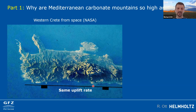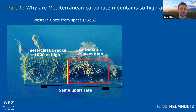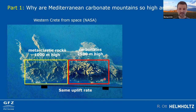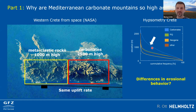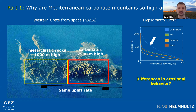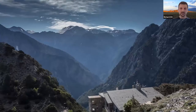Moving along the coastline we get into a really high mountain range at 2.5 kilometers elevation. The difference is geological: on the left we're in metamorphic bedrock, whereas here we have a carbonate mountain range substantially higher. On the island of Crete, a hypsometry plot shows carbonates in blue are substantially higher than all other rock units, despite having the same tectonic uplift rate — meaning there must be a difference in erosional behavior.